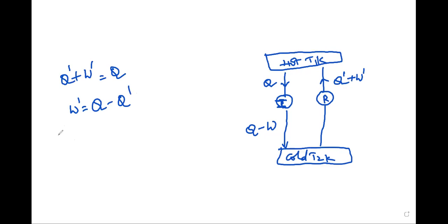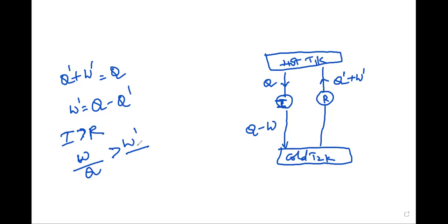This leads to a contradictory statement. First, we assume — if possible — that irreversible engine I is more efficient than reversible engine R. If I is more efficient than R, then efficiency of I, which is W over Q, is greater than efficiency of R, which is W' over Q. This implies W is greater than W'.